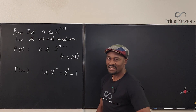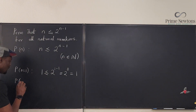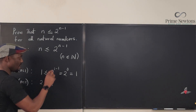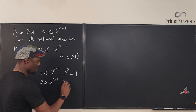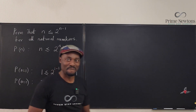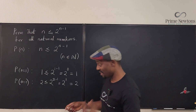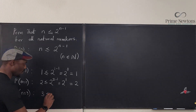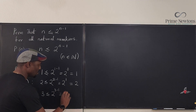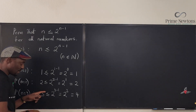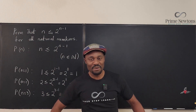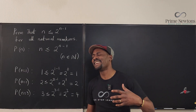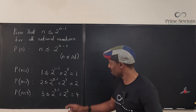Let's test another number. For n equals 2, the proposition says 2 is less than or equal to 2 raised to power 2 minus 1, which is 2 raised to power 1, equal to 2. So we get 2 equals 2, which is true. Let's try n equals 3: 3 is less than or equal to 2 raised to power 3 minus 1, that is 2 raised to power 2, which equals 4. So 3 is less than 4, which is true. We've tested enough numbers — we can conjecture this is always true, but in mathematics we can't just claim it; we have to prove it.